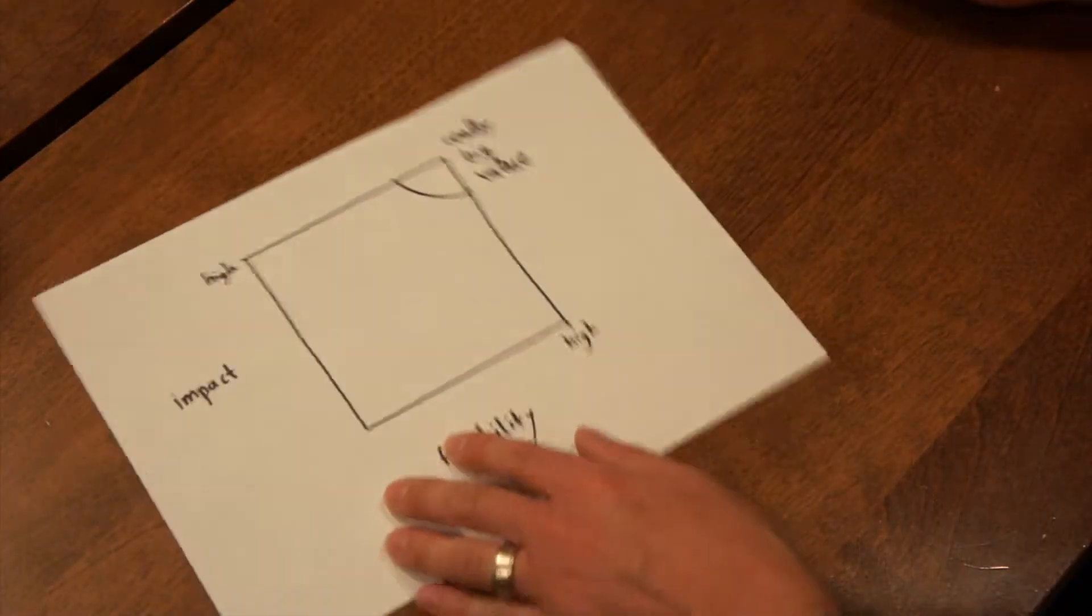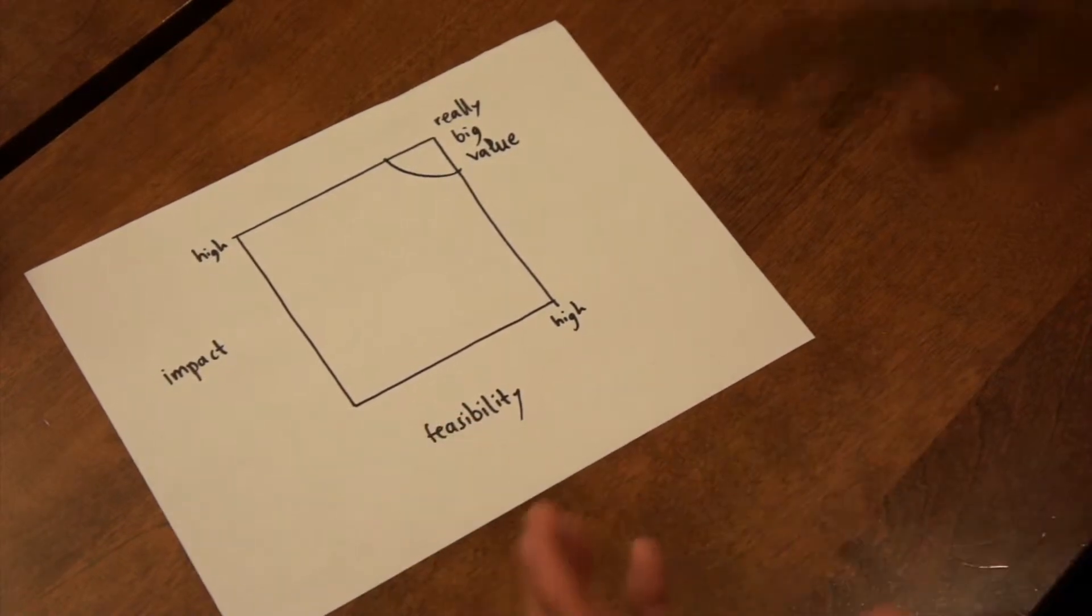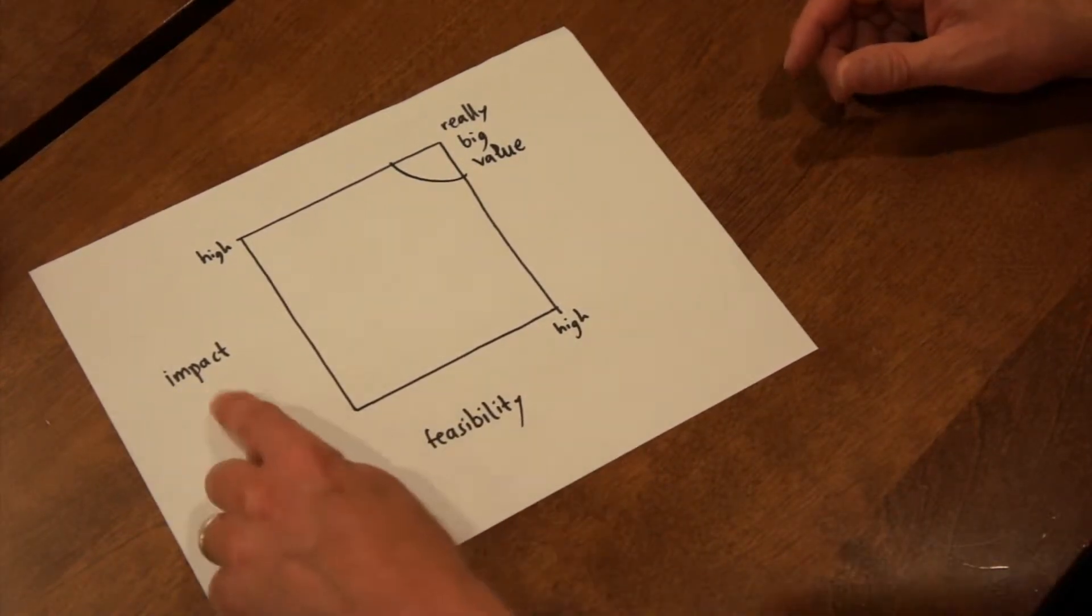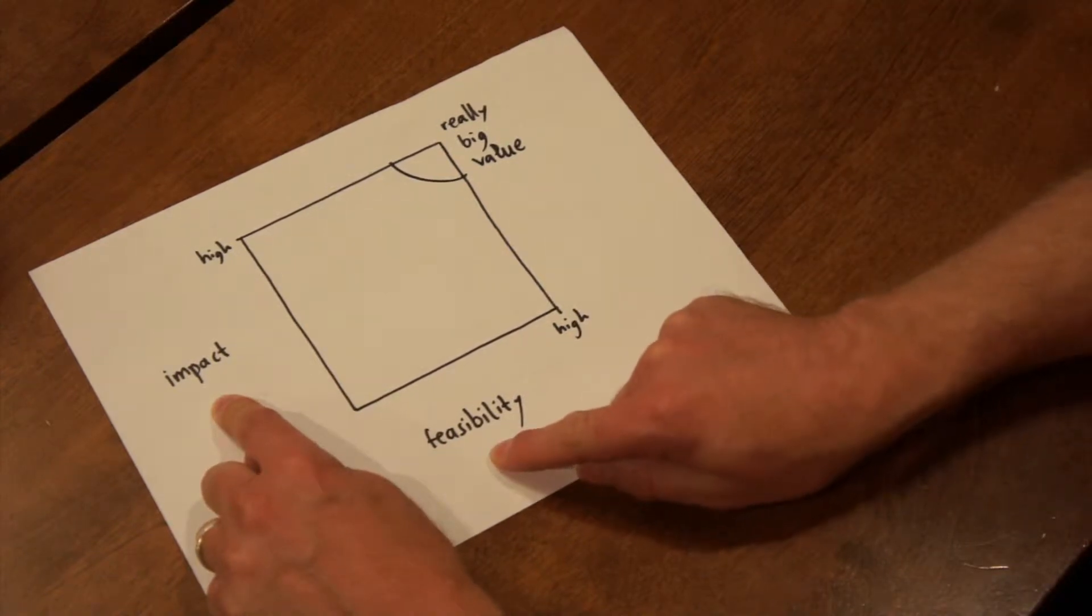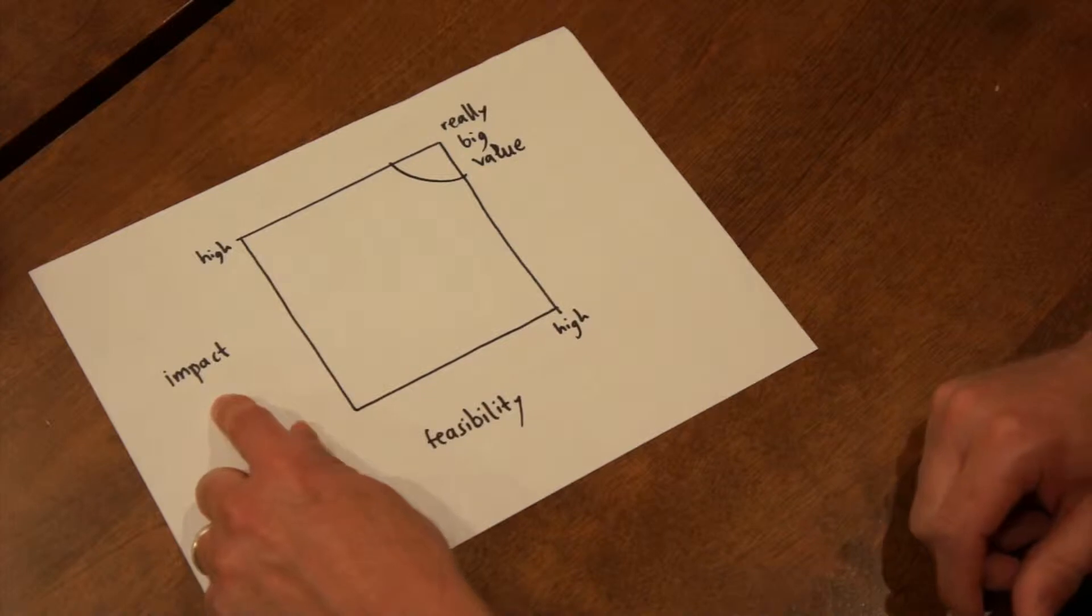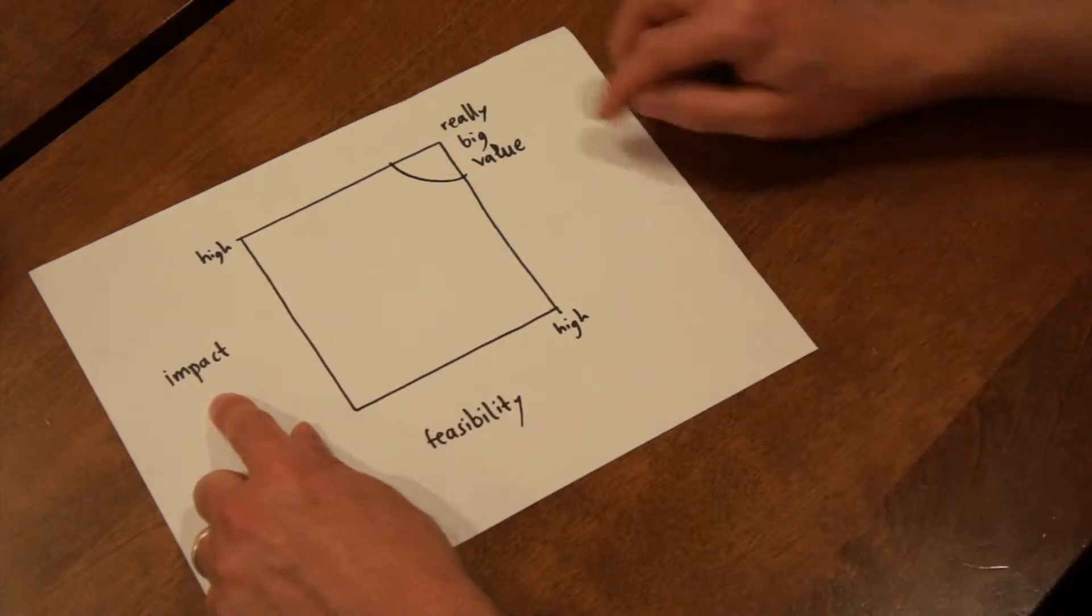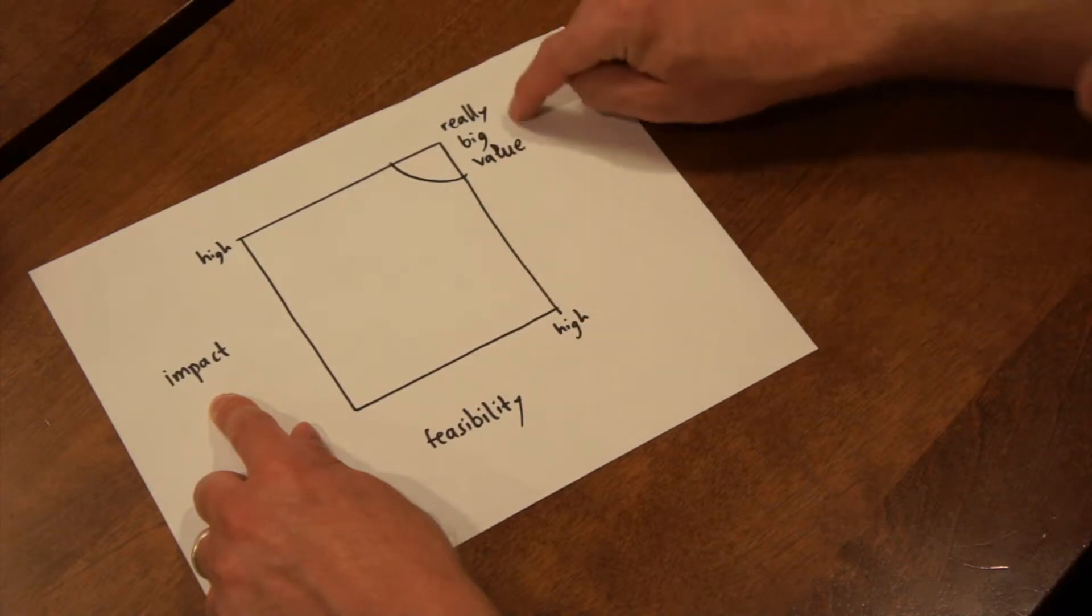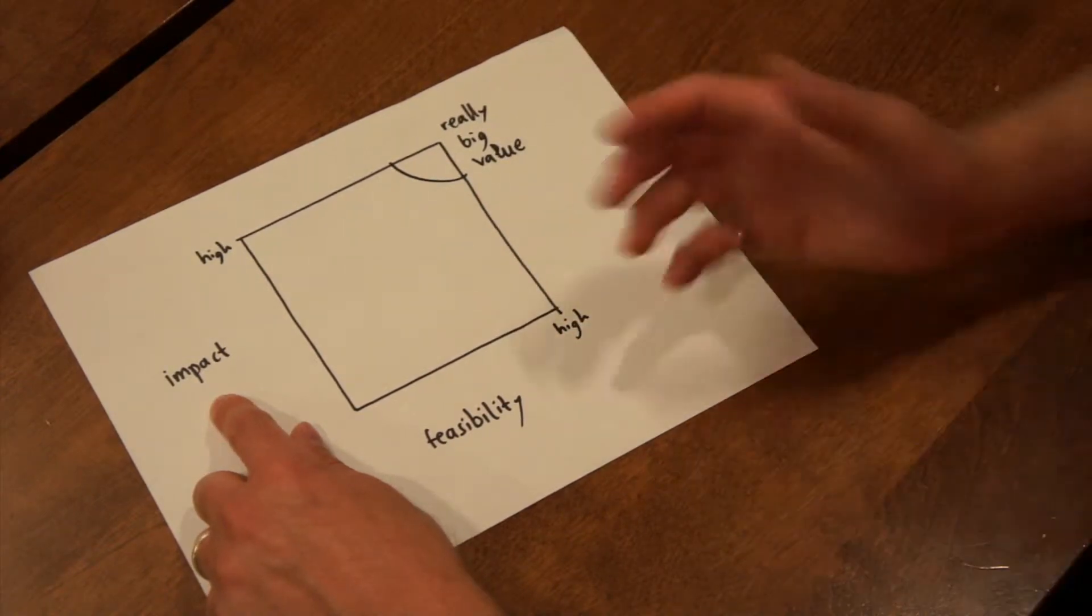So first let me set up a scenario. I want you to imagine with me that you've got a group of learners, entrepreneurial learners that you're working with and you're driving them to come up with the most impactful and feasible new venture idea that you can. Let's assume you're using an idea modeling or business modeling approach and you're seeking to help them go from wherever they are to this really big value zone. So that's the setup.